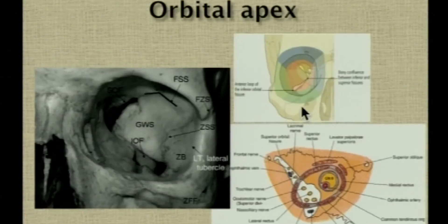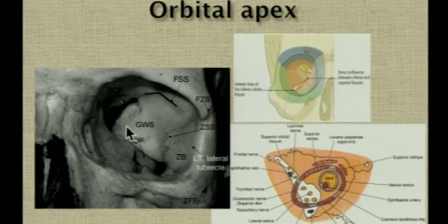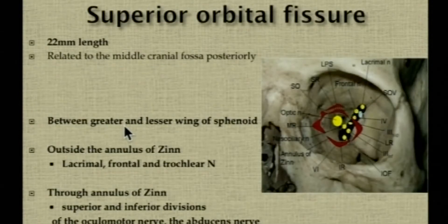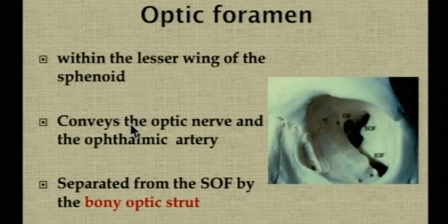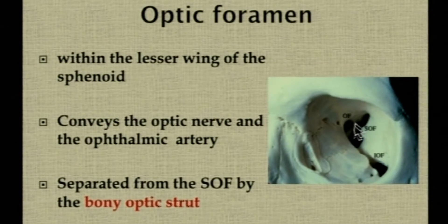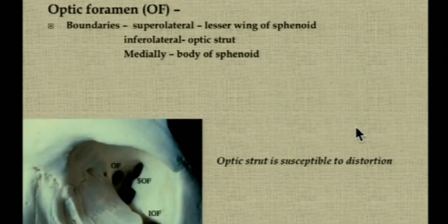The orbital apex lies behind the confluence of the inferior and superior orbital fissures and contains the superior orbital fissure and the optic foramen. The superior orbital fissure is 22 mm in length and connects the orbit to the middle cranial fossa, transmitting various cranial nerves. The optic foramen is within the lesser wing of the sphenoid bone and is separated from the superior orbital fissure by the optic strut — also part of the lesser wing of the sphenoid — which is susceptible to damage.